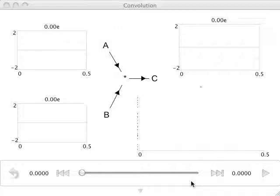In the semantic pointer architecture, we use circular convolution to bind vectors in order to construct language-like representations.